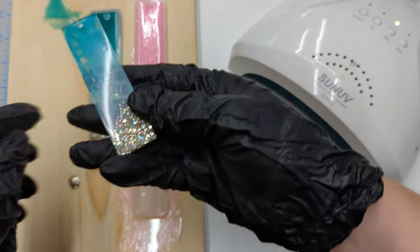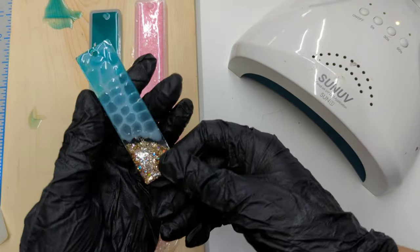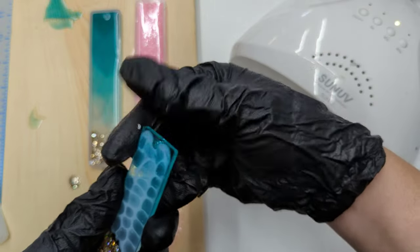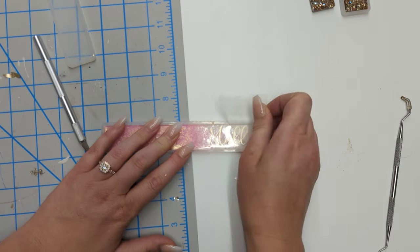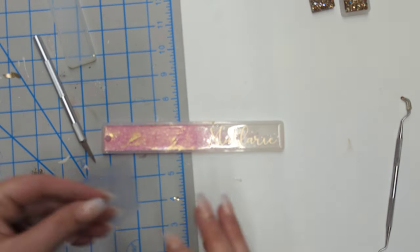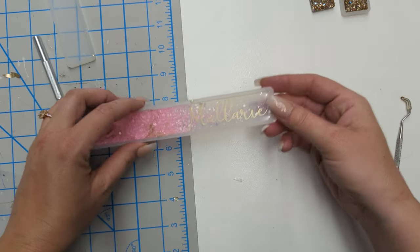This is after both of them are cured. The edges are still a little bit rough and you can definitely feel that UV resin on the top. It's kind of bumpy from those cells or bubbles that we created. I'm going to put a decal on the other one, I just did a simple name decal.